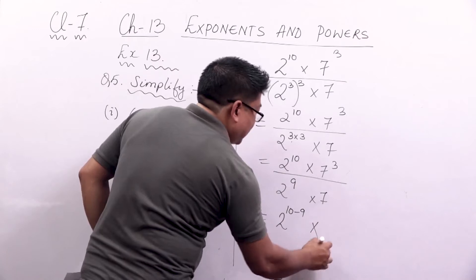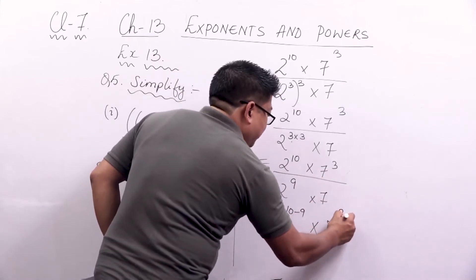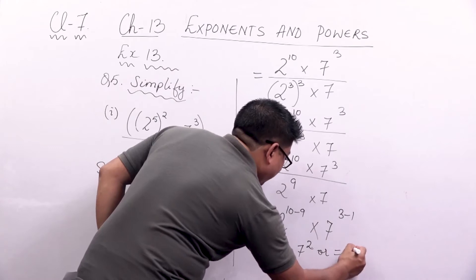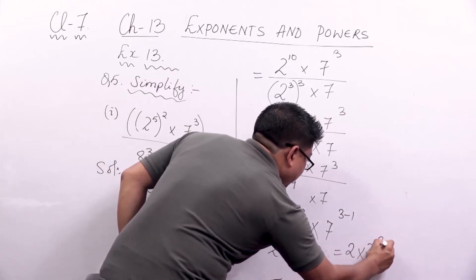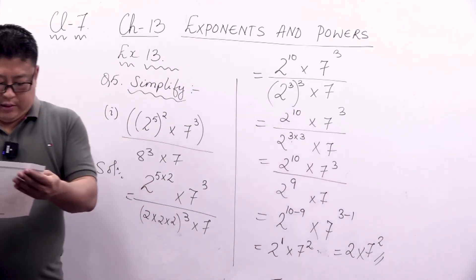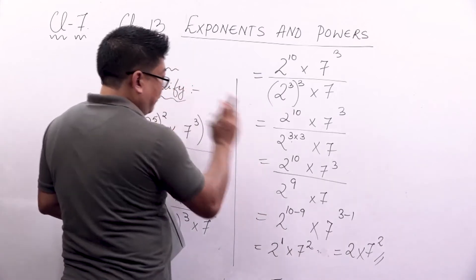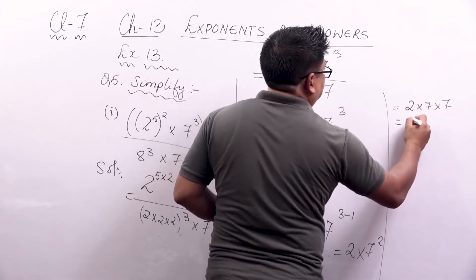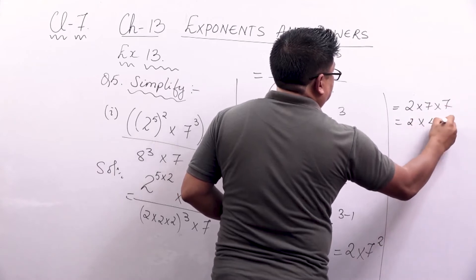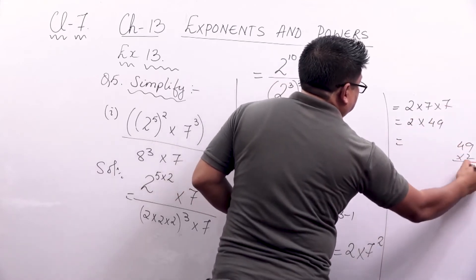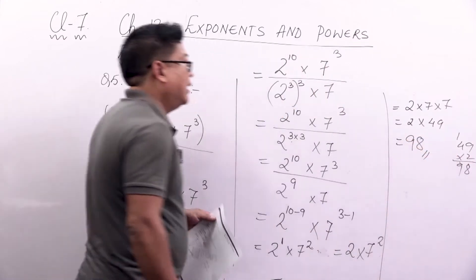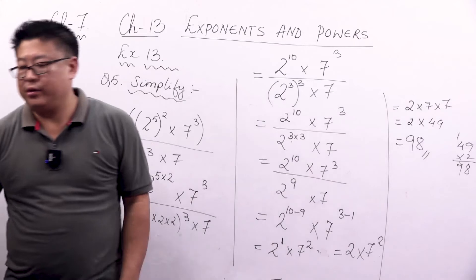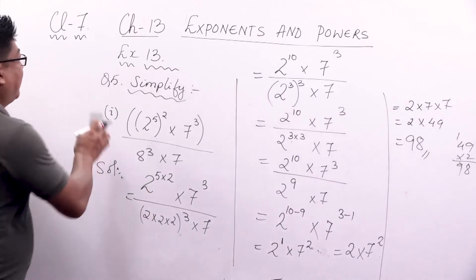Subtracting the exponents, the final answer will be 2 to the power 1 into 7 to the power 2, which we can write as 2 into 7 to the power 2. Since we need to simplify fully: 2 into 7 into 7 equals 2 into 49, and 49 times 2 gives 98. So the final answer is 98.